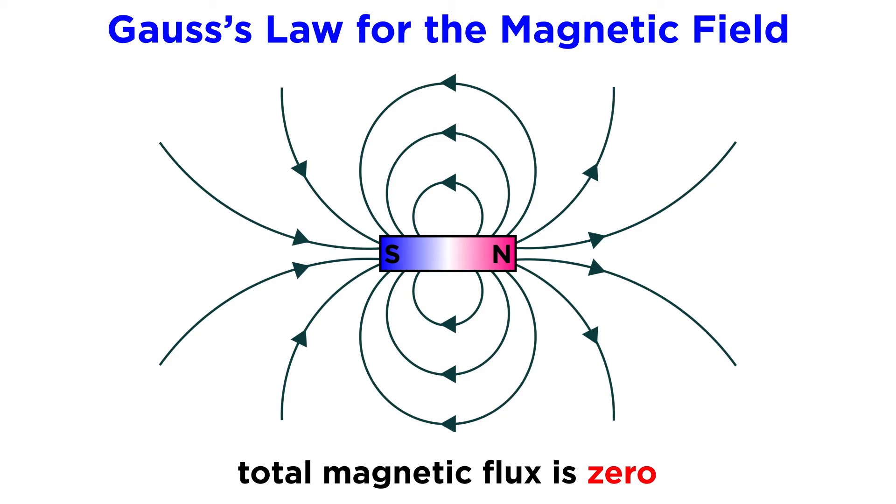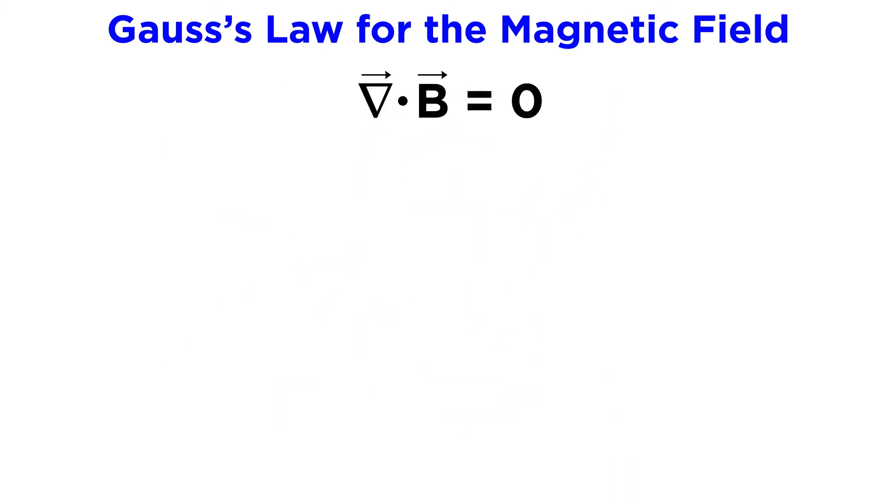In the next two tutorials after this one, the relationship between the electric field and magnetic field will be explored further. Before we get there, let's take a look at a problem using the results of the two forms of Gauss's law.